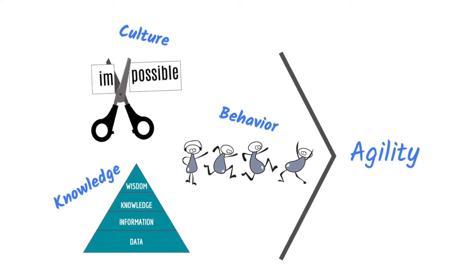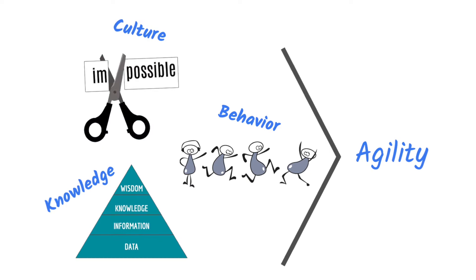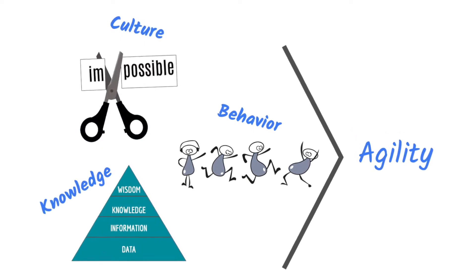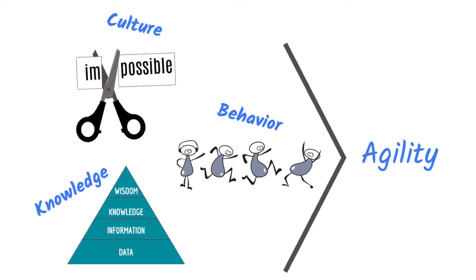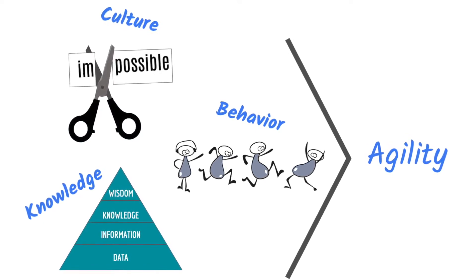But there is no silver bullet. If you are looking for a quick fix to get you agility, you will not find it. Because agility is not the result of process. Despite what the many so-called agile frameworks tell you, there is no such thing as an agile process.